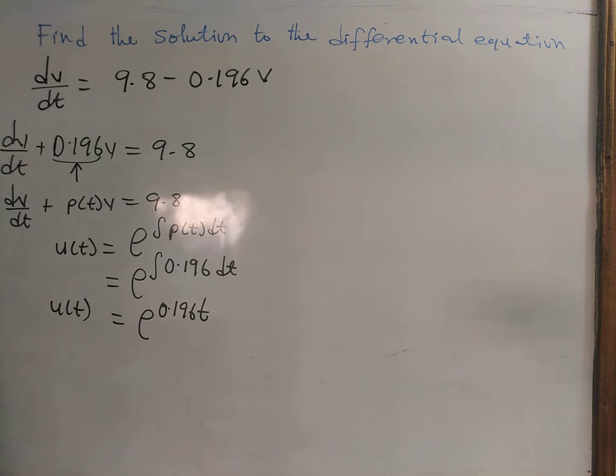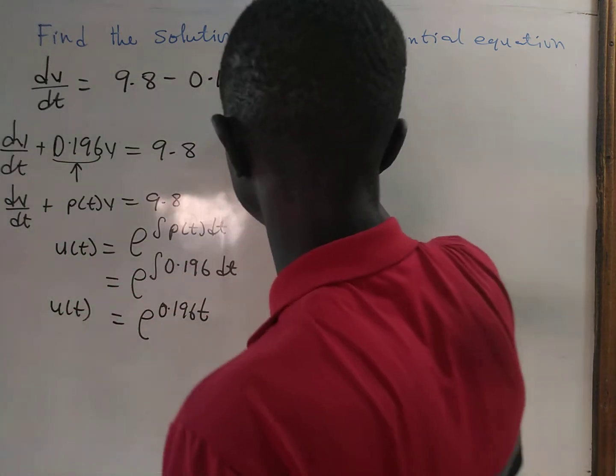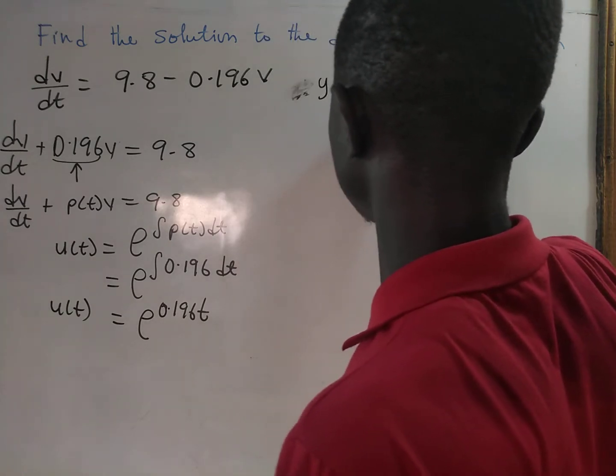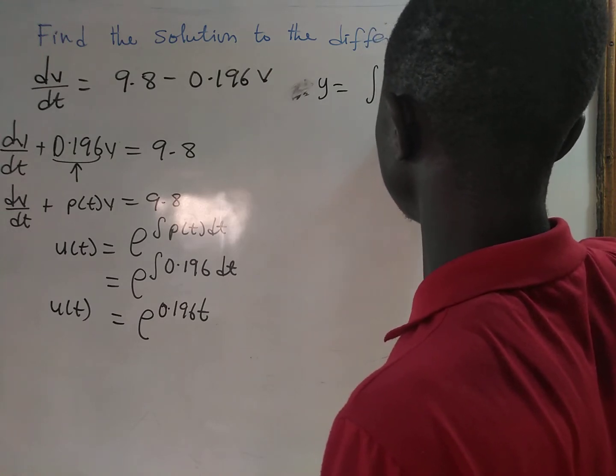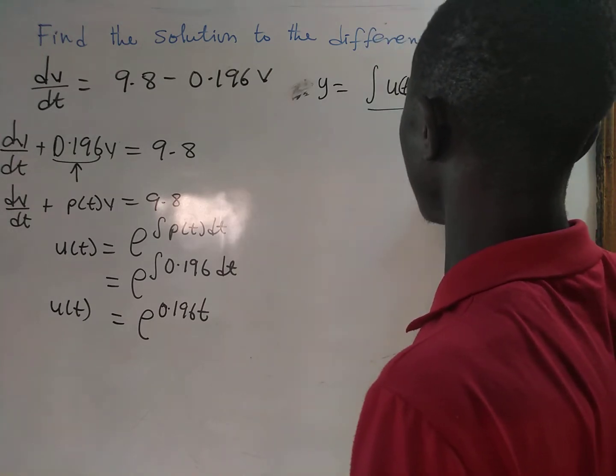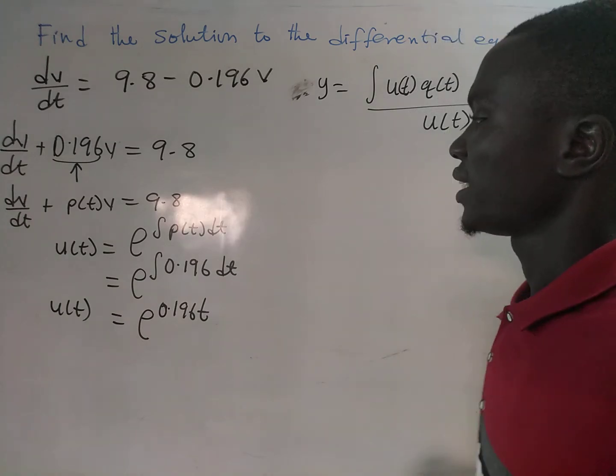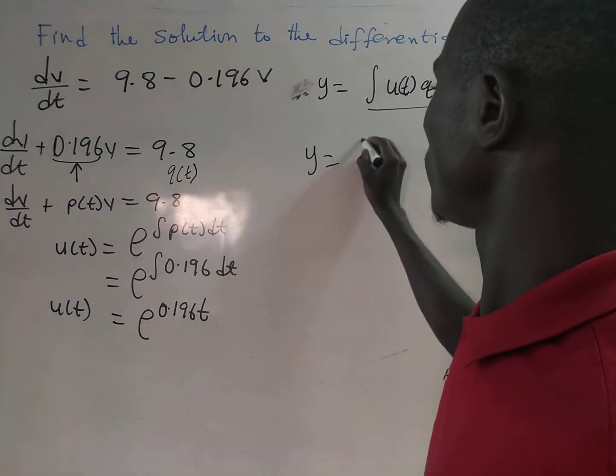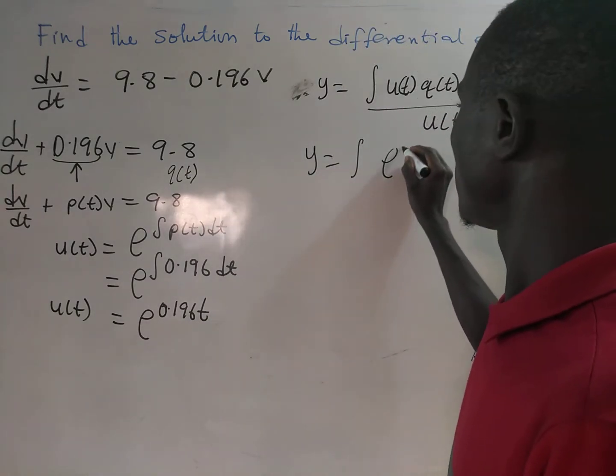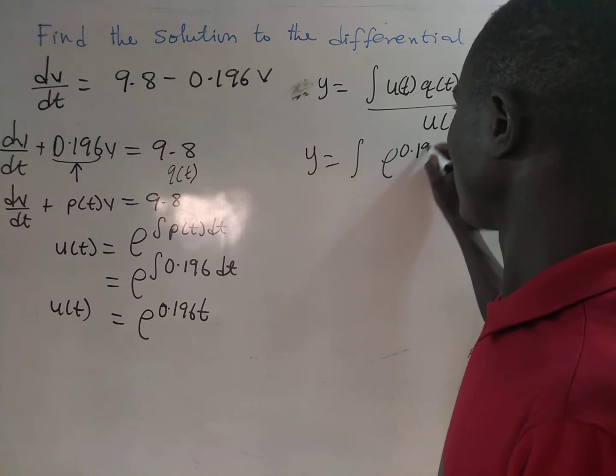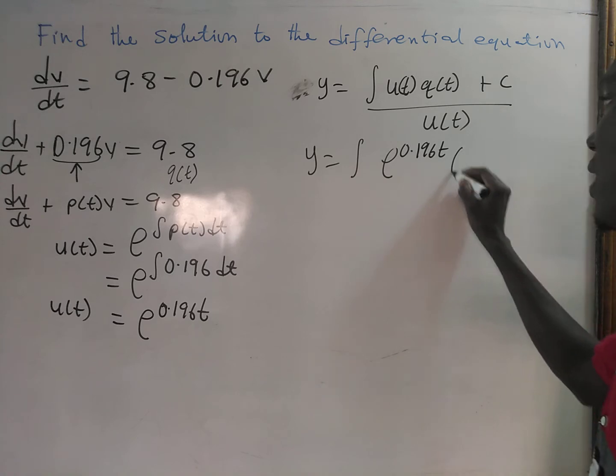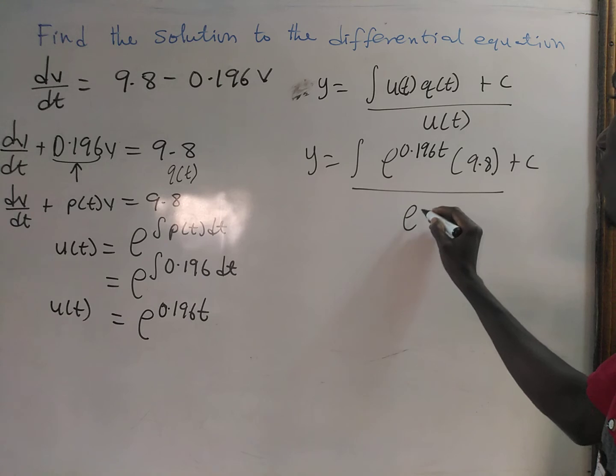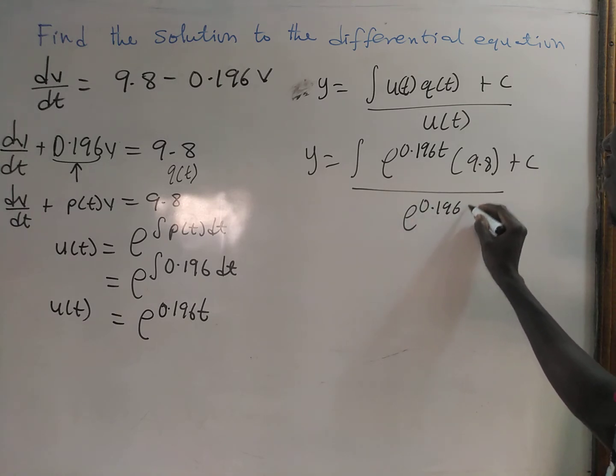Now what do we do? We find the general solution, which is y equals the integral of u(t) times q(t) plus c, all divided by u(t). Our y equals the integral of e to the power 0.196t times 9.8 plus c, all divided by e to the power 0.196t.